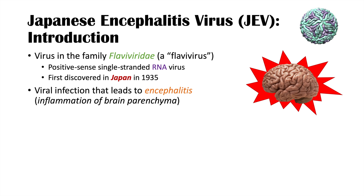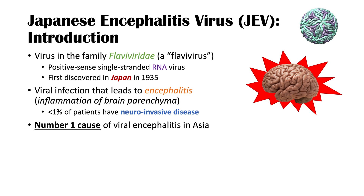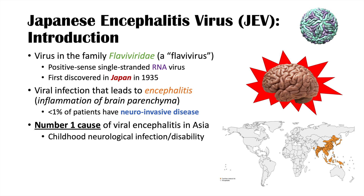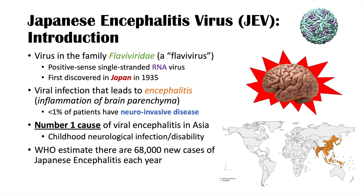Although JEV leads to encephalitis, actually only less than 1% of patients infected with this virus have neuroinvasive disease. Nevertheless, the Japanese encephalitis virus is the number one cause of viral encephalitis in Asia and the number one cause of childhood neurological infection and disability. The WHO estimates there are 68,000 new cases of Japanese encephalitis each year.